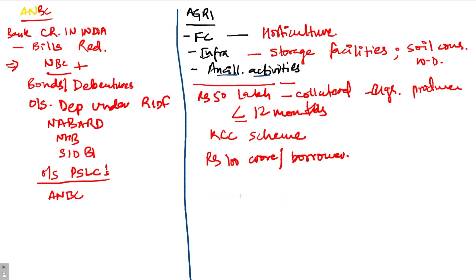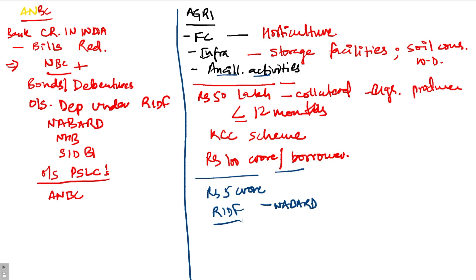For ancillary activities: loans up to rupees 5 crore to cooperative societies of farmers for disposing of the produce of members are included. Additionally, outstanding deposits under RIDF and other eligible funds with NABARD on account of priority sector shortfall are also counted under ancillary activities.